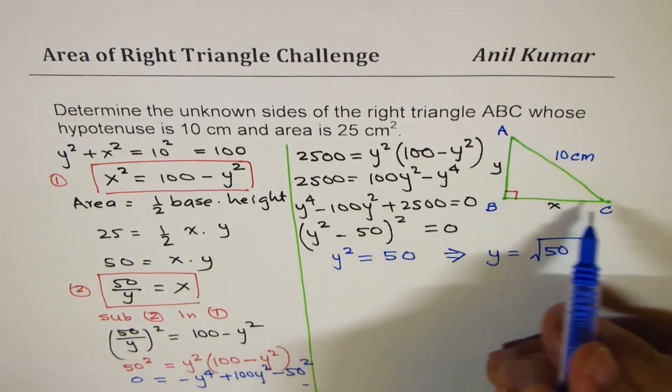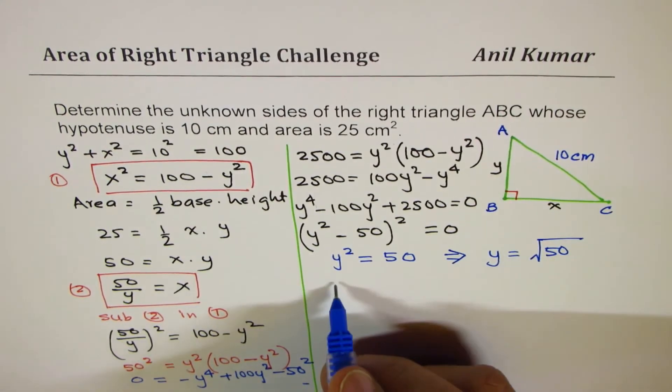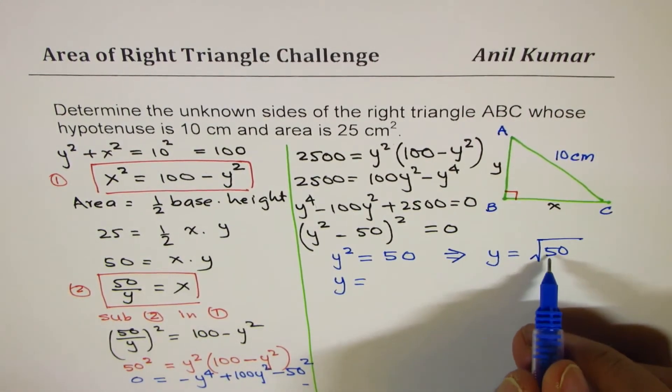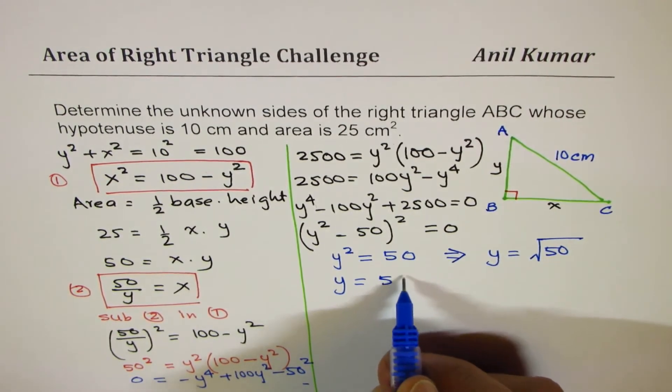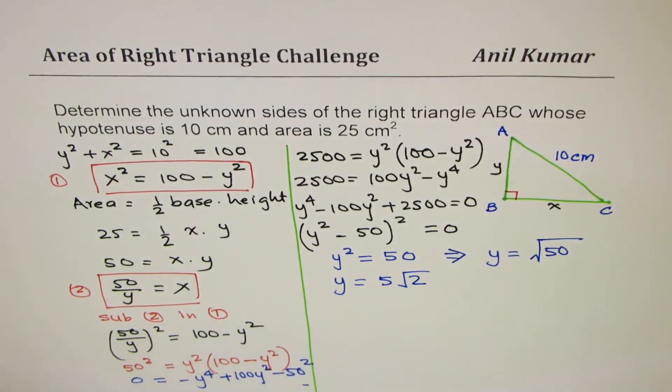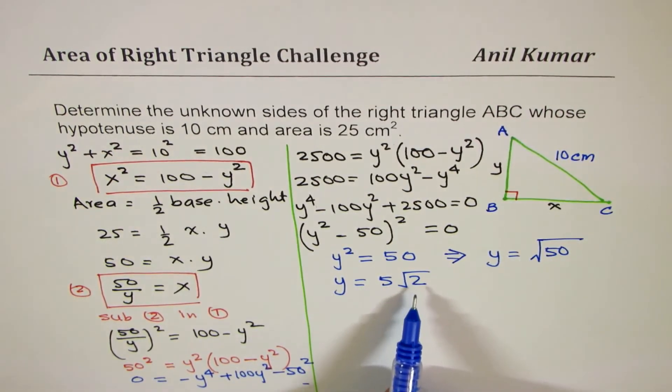And this equation has two solutions, which is Y square is equal to 50. And that gives you that Y equals to square root of 50. Since it is a side of a right triangle, we'll always take positive. And that gives you Y equals to, you could write this as 25 times 2. So you could write this as 5 square root 2. Does it make sense to you? So we get the value of Y as 5 square root 2.